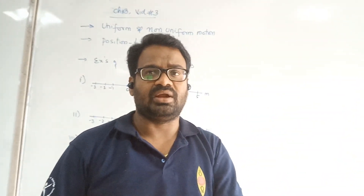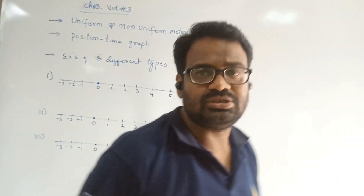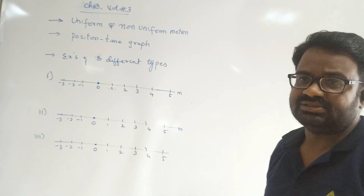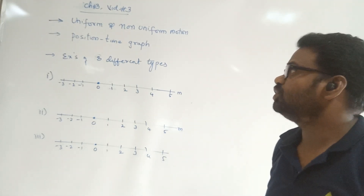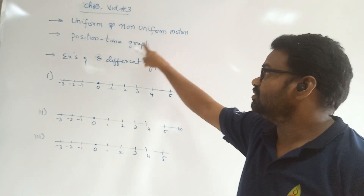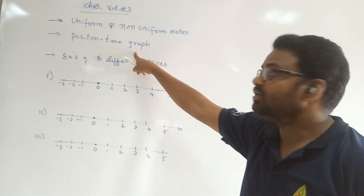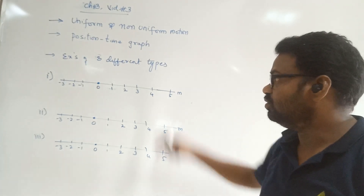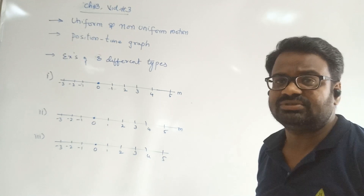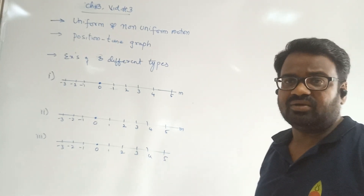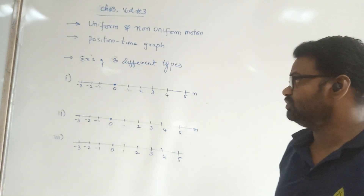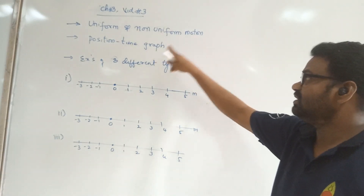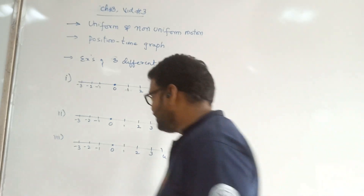I think we stopped earlier at the concept of uniform and non-uniform motion and graphical representation, so now we are going to continue with that. In today's class — Chapter 3, Video 3 — we are going to focus mainly on uniform and non-uniform motion, and how to indicate the position-time graphs. I am taking three different examples to explain these three different types of graphs.